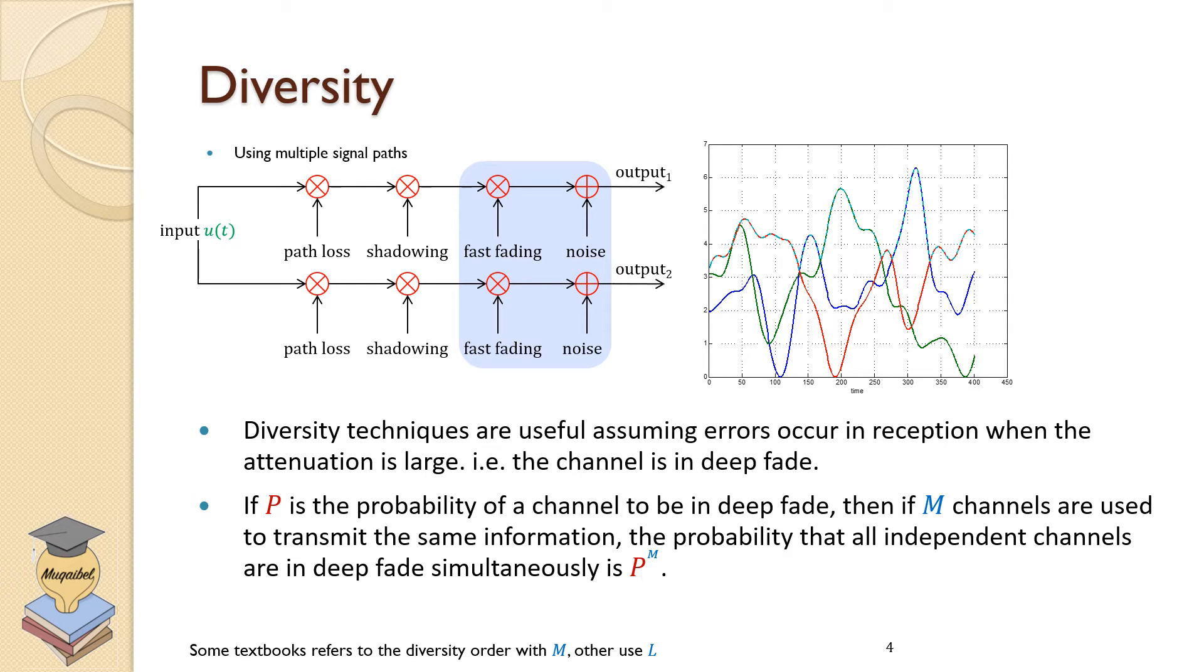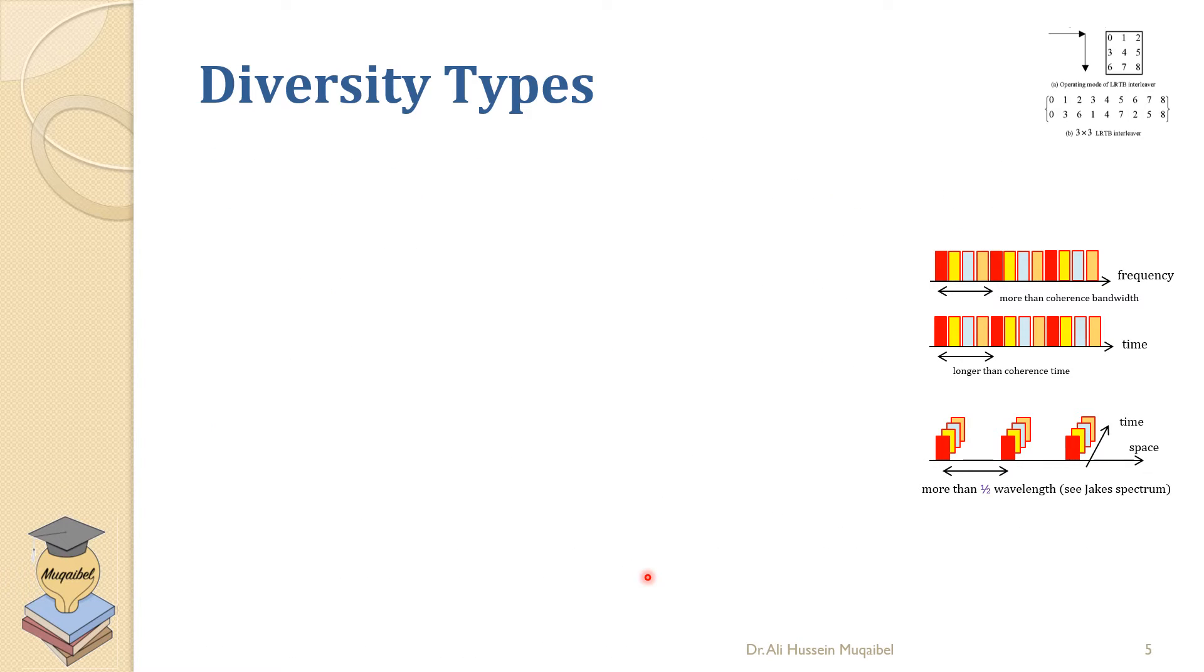Types of diversity: diversity is sending over different channels. We can have frequency diversity, which means we send over two different frequency bands, and that's good when the separation between carrier frequencies is greater than the coherence bandwidth.